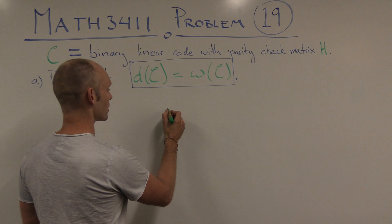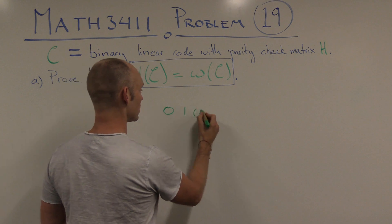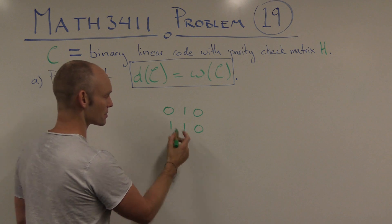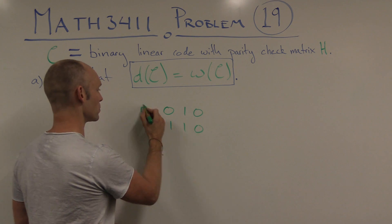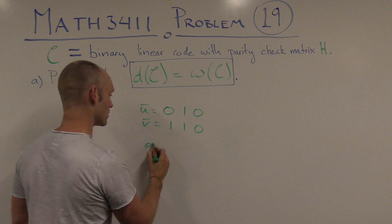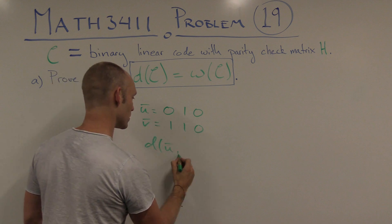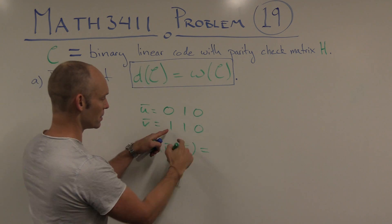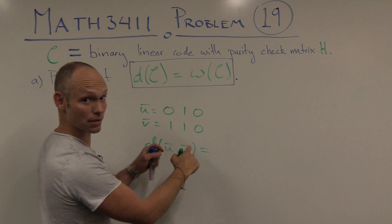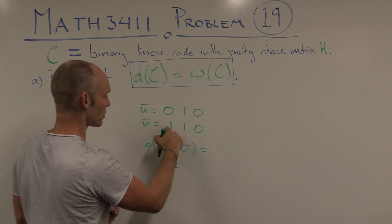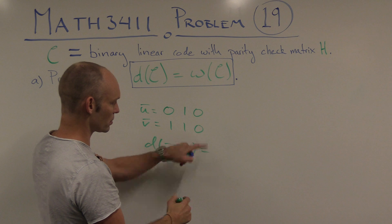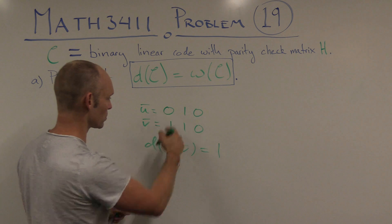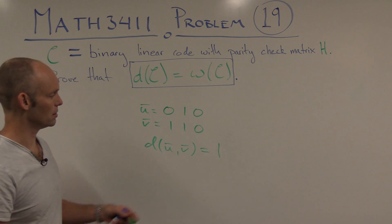For instance, if we had codewords U = (0, 1, 0) and V = (1, 1, 0), then the distance between U and V is the number of entries in which they differ. 0 and 1 are different; 1 and 1 are not; 0 and 0 are not. So we have exactly one coordinate in which they differ, meaning the distance between these two codewords would be 1.